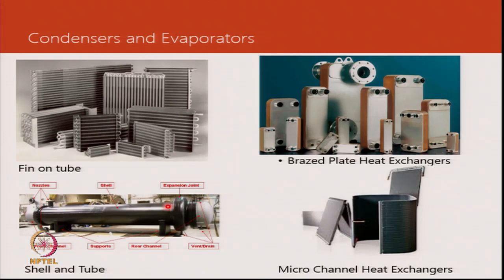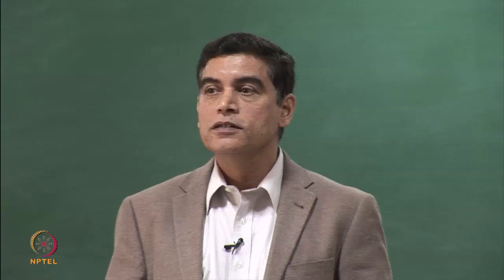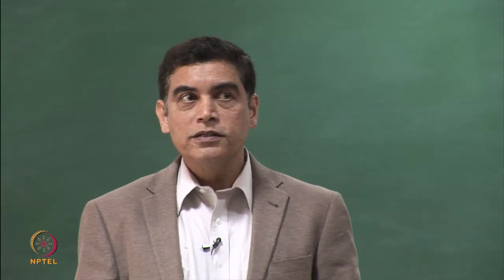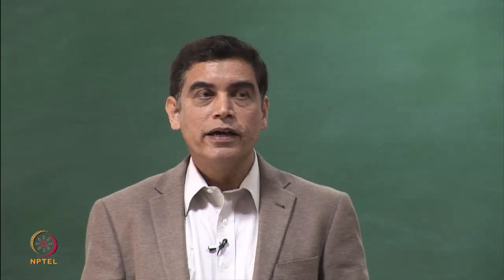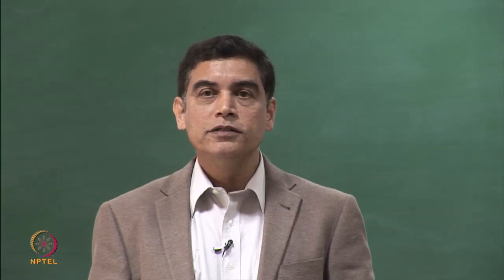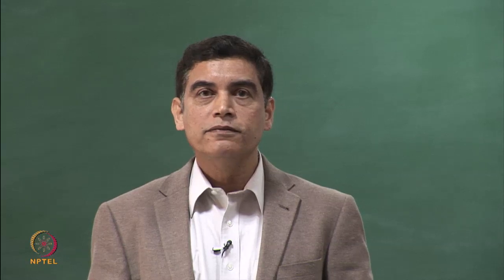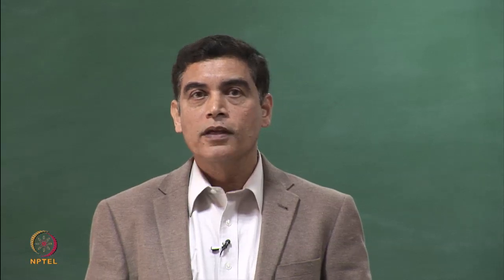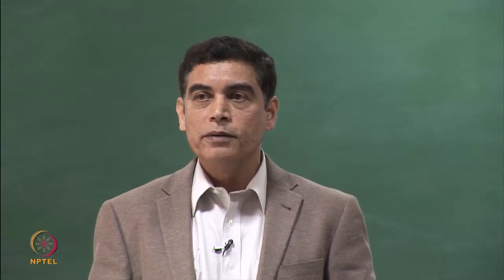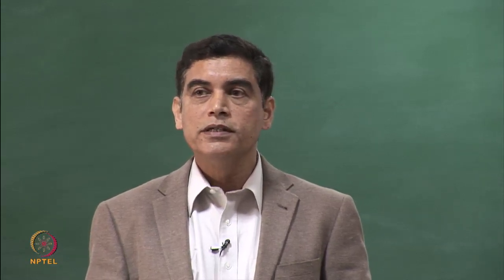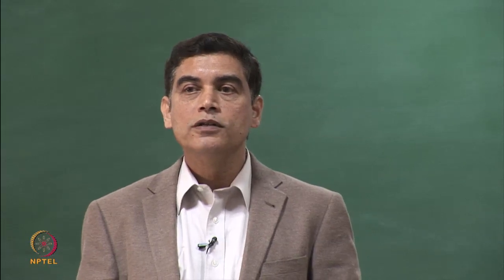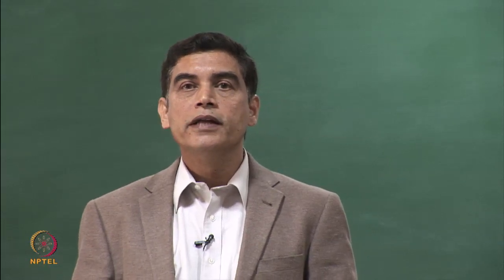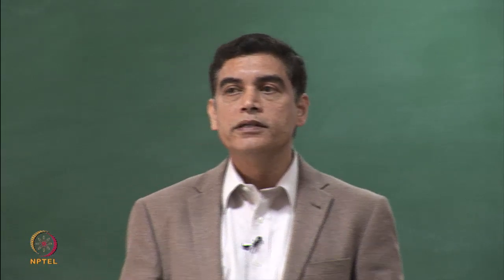Shell and tube condensers are the most conventional type and have been in use for a long time. They are easy to manufacture and fairly robust. They can handle very high pressures and temperatures, but they are expensive to build. So wherever the application permits, they have gradually been replaced by lower-cost alternatives like brazed plate heat exchangers.